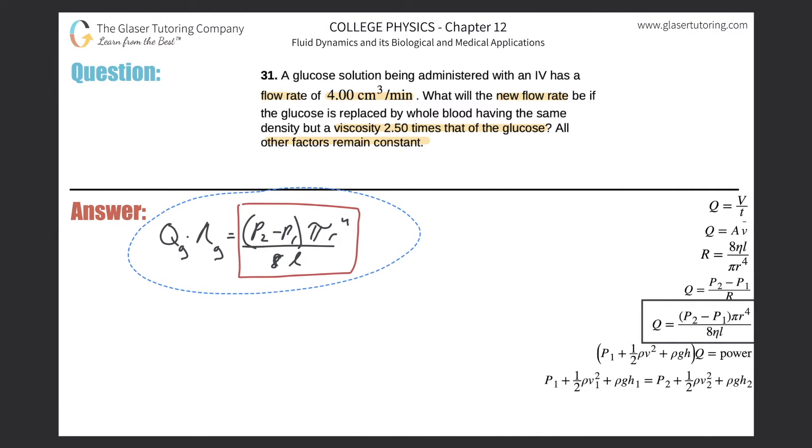I can now create a second equation for that of whole blood where I can just say the flow rate of whole blood times the viscosity of that whole blood will equal then P2 minus P1 times pi R to the fourth all divided by 8L. And again they told us all other factors are constant. So these two boxes in red are the same. They're equal.